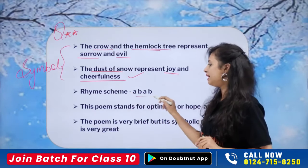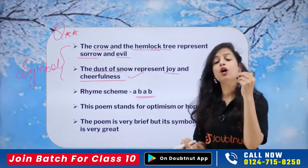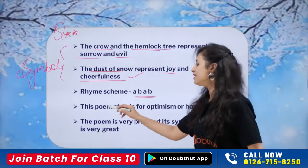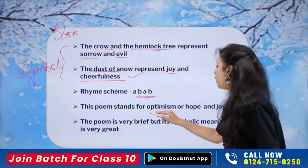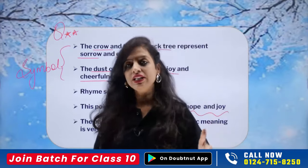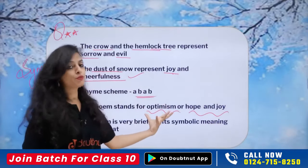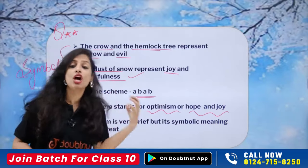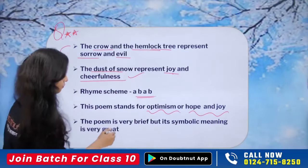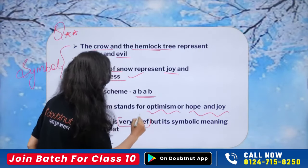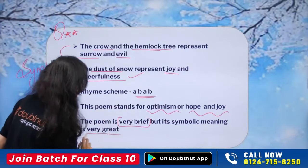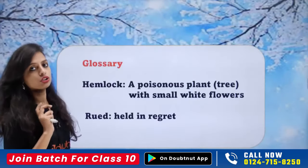The rhyming scheme A, B, A, B is now something you'll remember for life. What does this poem convey? It conveys optimism, hope, and joy. As I mentioned, instead of taking everything pessimistically, we can go for optimism, hope, and joy. Find the good in everything — see the positive things. The poem is very brief and short, but its symbolic meaning is very great.